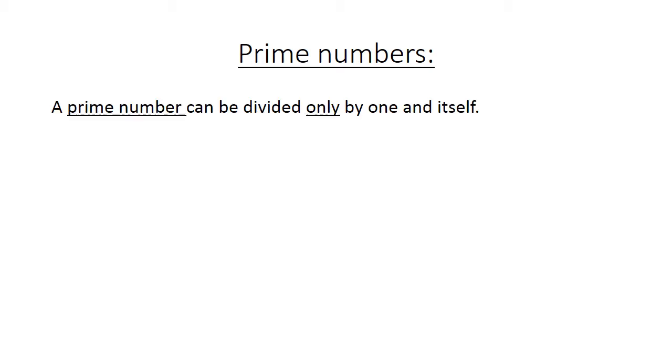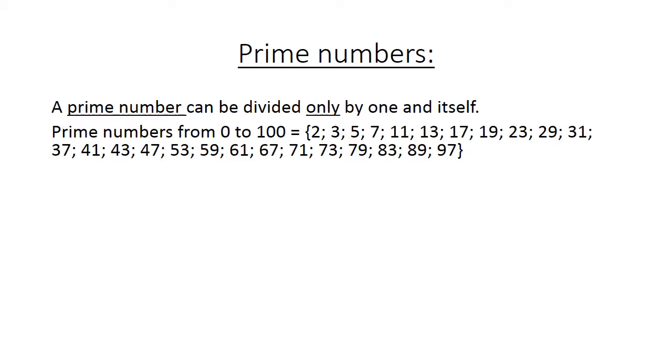Prime numbers. A prime number can be divided only by 1 and itself. Prime numbers from 0 to 100 is equal to 2, 3, 5 and you can read the list there up to 97. Remember 1 is not a prime number.